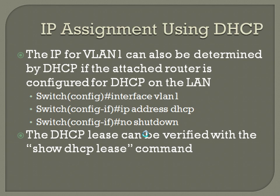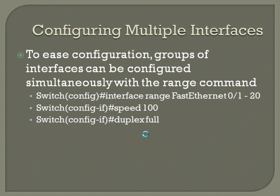For switches in particular, being able to configure multiple interfaces at one time is incredibly helpful. On a large switch — like a 4006 series with 240 ports — some ports need specific configurations for interconnections between switches, but access ports are all going to have pretty much the same configuration. Manually configuring each of those 240 ports individually is a big pain, so using the range command lets you circumvent a lot of that.